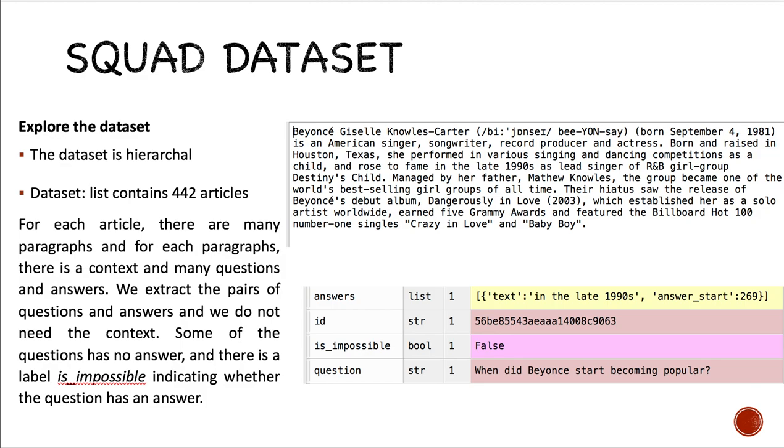And we extract the pairs of questions and answers, and we do not need the context because what we only want is the pairs of dialogues. And some of the questions have no answers, and there is a label which indicates whether it is possible to have the answer to the dataset or not.